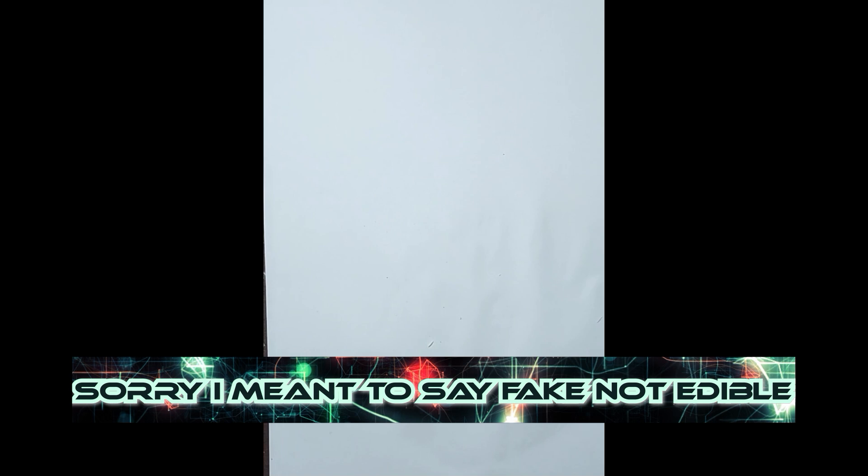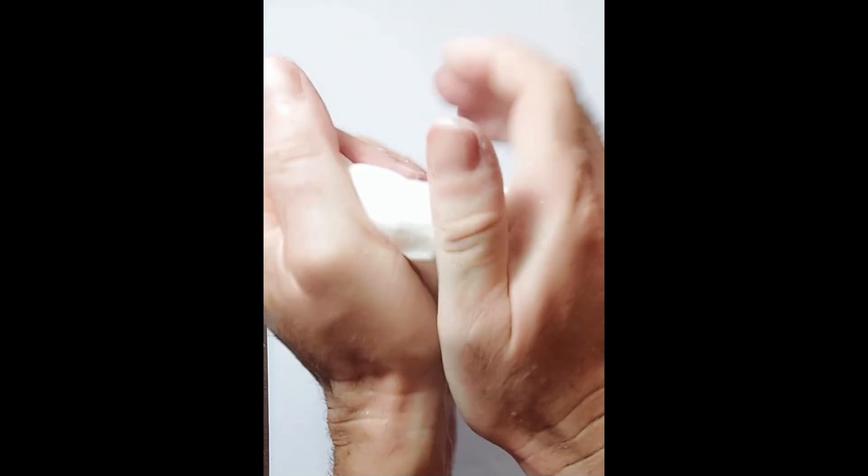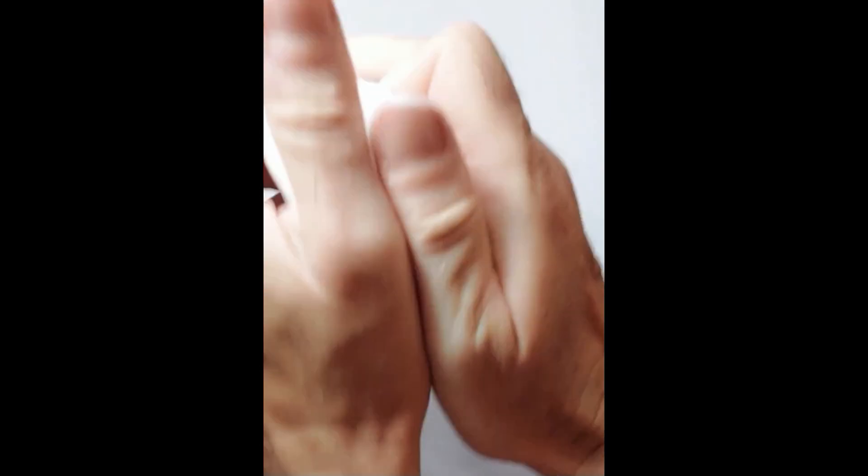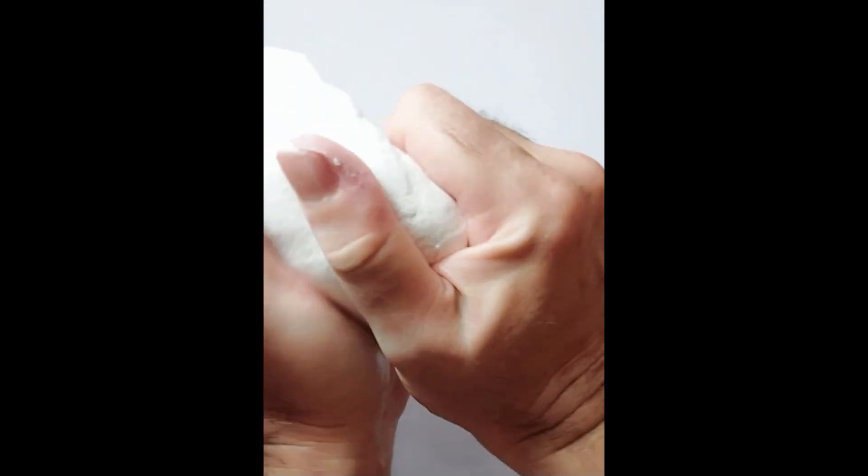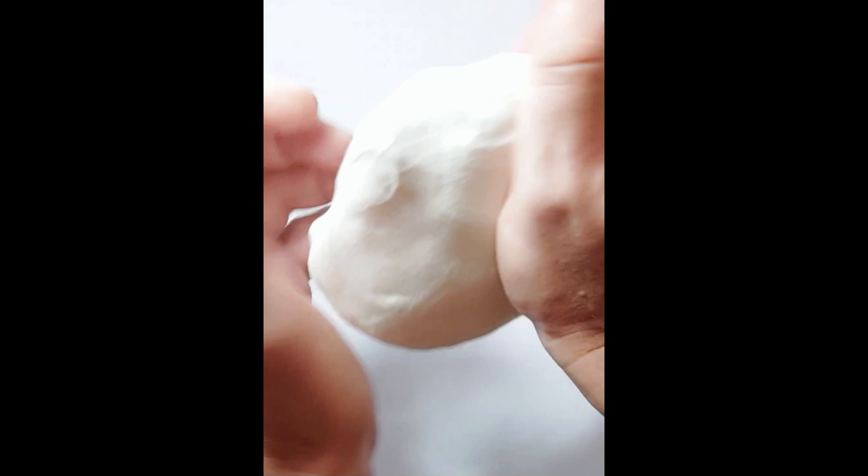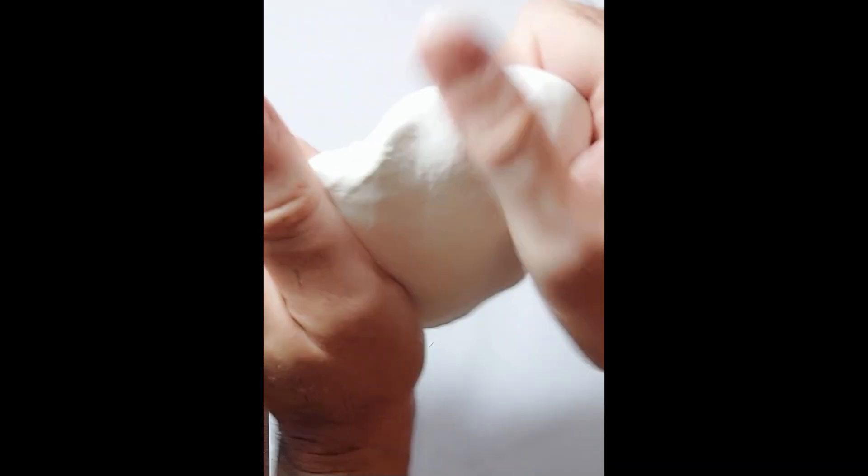So without further ado, let me show you how you would do that. Now we need some air dry clay and I have some here and I'm just going to knead it and get it nice and soft. Once I've done that, I'm just going to flatten it out as much as I can because we need to roll it, because we're going to make it into a cone.